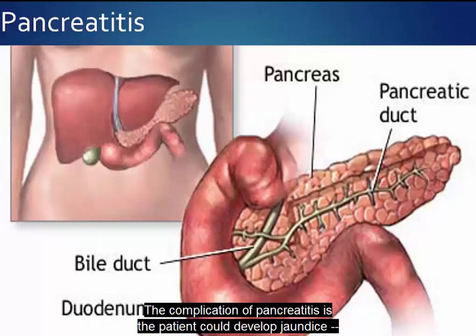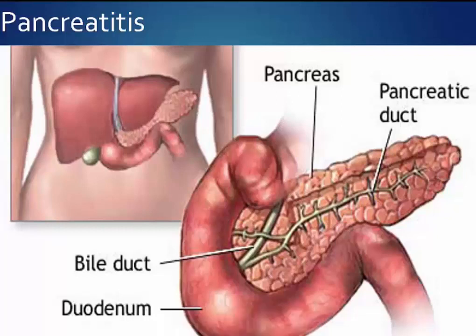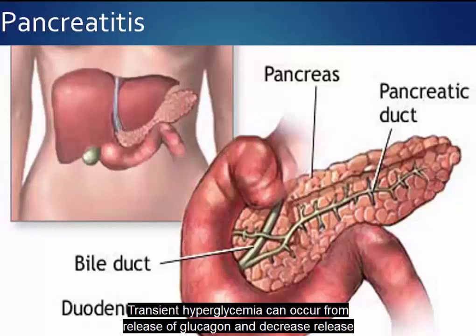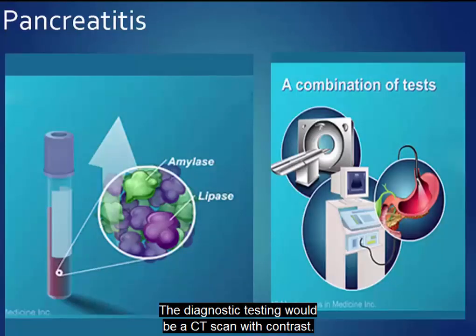The complication of pancreatitis is that the patient could develop jaundice, which occurs from swelling of the head of the pancreas blocking the blood flow through the common bile duct. Transient hyperglycemia can occur from release of glucagon and decreased release of insulin from damaged islet cells. The diagnostic testing would be a CT scan with contrast.